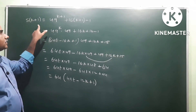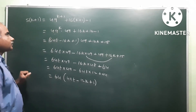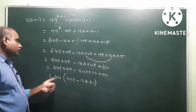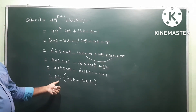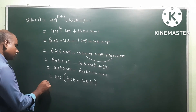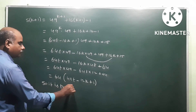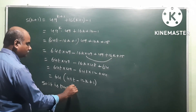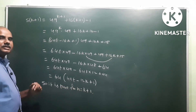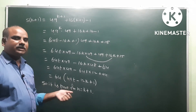This is equal to 64 times some integer, so it is true for n = k + 1. Hence, by the principle of mathematical induction, 49^n + 16n - 1 is divisible by 64 for all values of n.